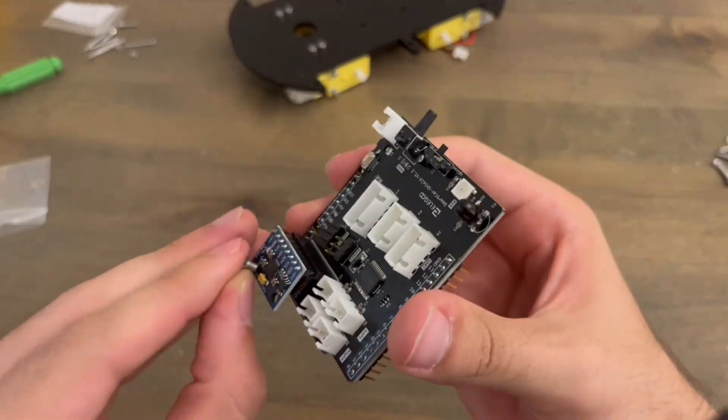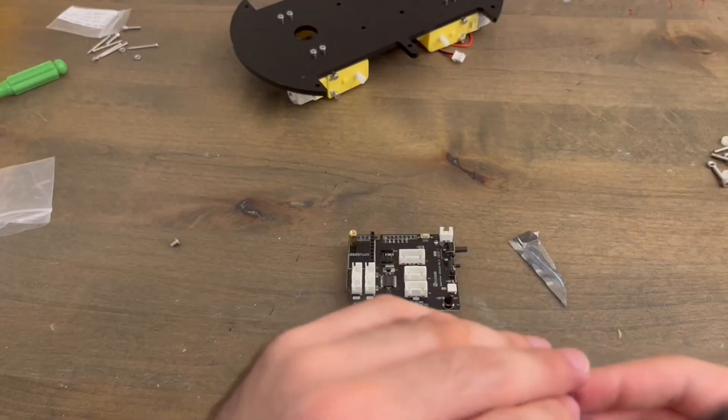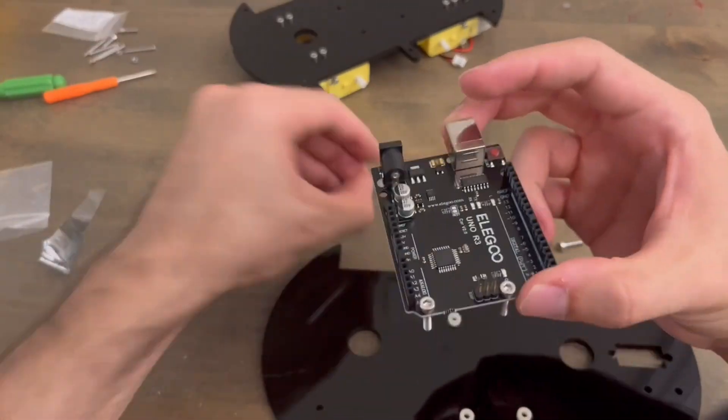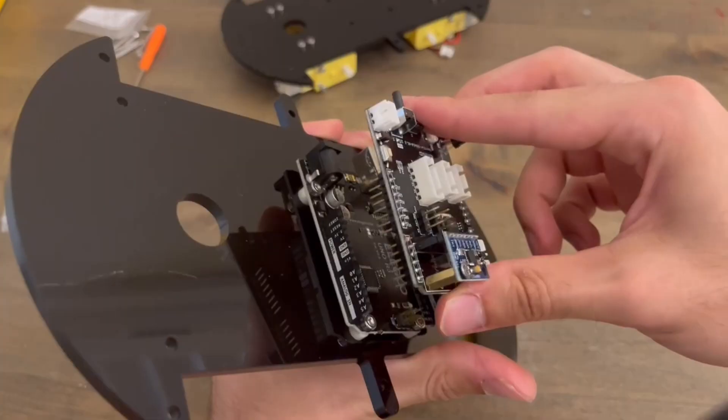Next is the IO expansion board, into which we'll plug all of our sensors and motors, and the GY521 module. Those will both mount onto our Elegoo Uno R3 microcontroller, which is essentially the brain of the robot.